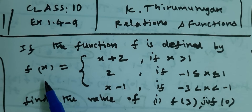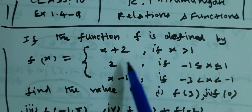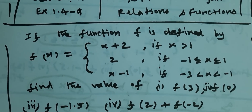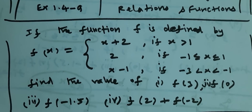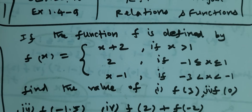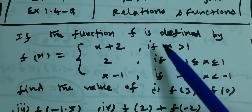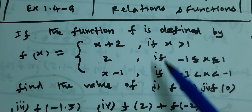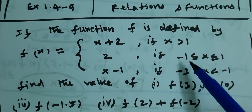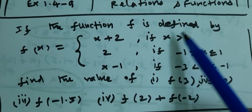We want to find the value of f of x. Let's quickly finish by checking the number line. If your value sees minus 1 or minus 3, we want to check the number line together.